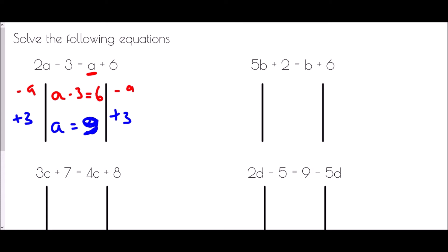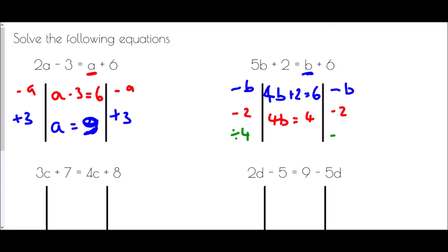In 5b plus 2 equals b plus 6, the smallest amount of b is the single b, so I subtract b from both sides: 5b take away b is 4b, giving 4b plus 2 equals 6. Next, to keep it balanced I subtract 2, so 4b equals 4. Finally, to get b all on its own I divide by 4 on both sides, so b equals 1.